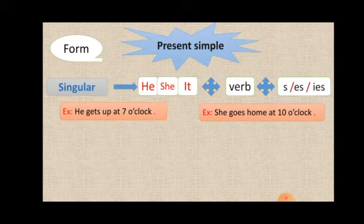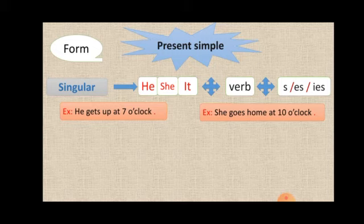When I add ies, I add it when a verb ends by y and before it a consonant letter. I remove y and put ies. Like the verb study, ends by y and before it is the letter d. It's a consonant. I remove y and put ies.